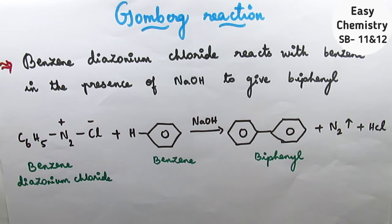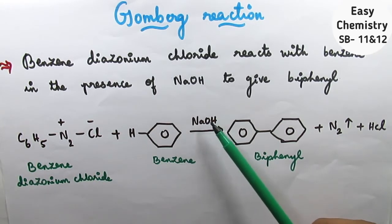Benzene diazonium chloride, C6H5-N2+-Cl-. This is known as benzene diazonium chloride, reacts with benzene in the presence of NaOH.